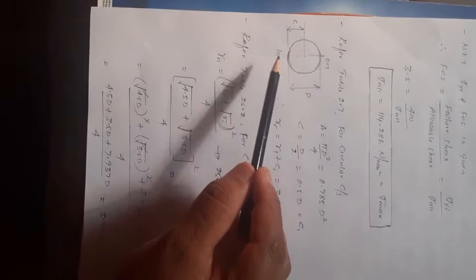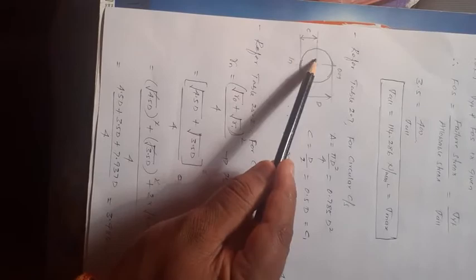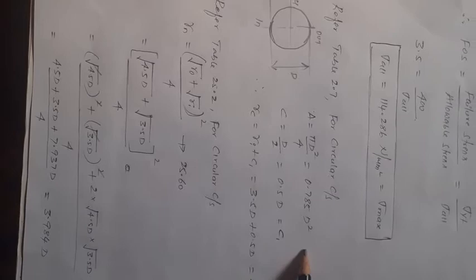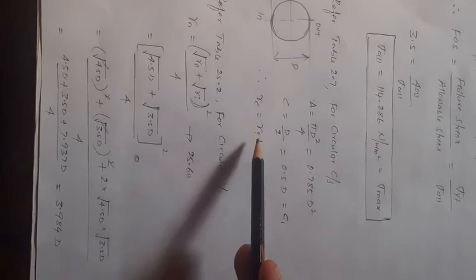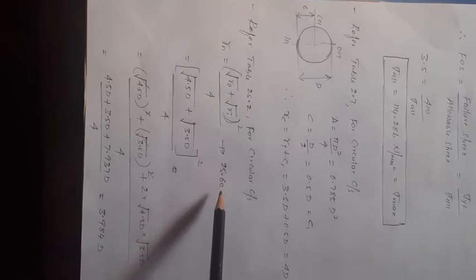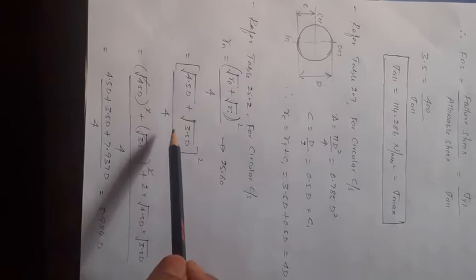From table 2.7 for the circular cross section, get area and C1 in terms of D. For the radius of the neutral axis, refer to table 25.2 using equation 25.60. Substitute R_0 and R_i in terms of D and expand using the (A+B)² formula: A² + B² + 2AB. Solving gives R_n equal to 3.984 times D.